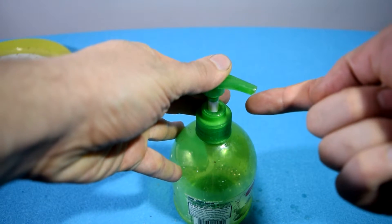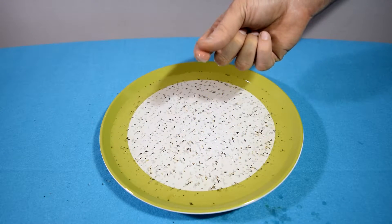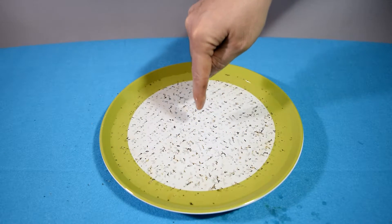Next all we have to do is to get some dish soap on our finger and then we're going to place our finger exactly in the middle of the plate and watch the magic happen.